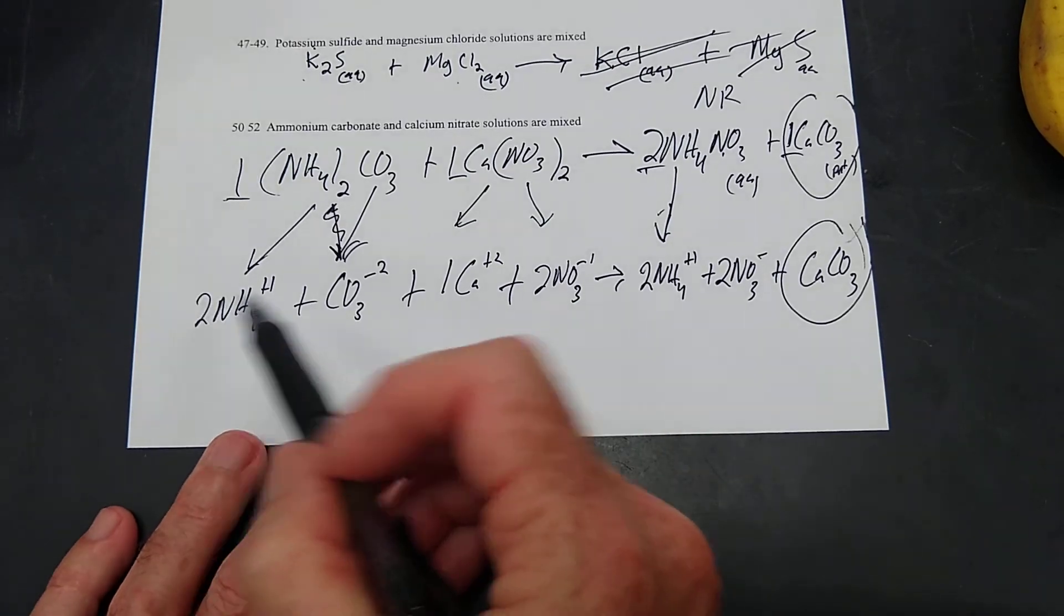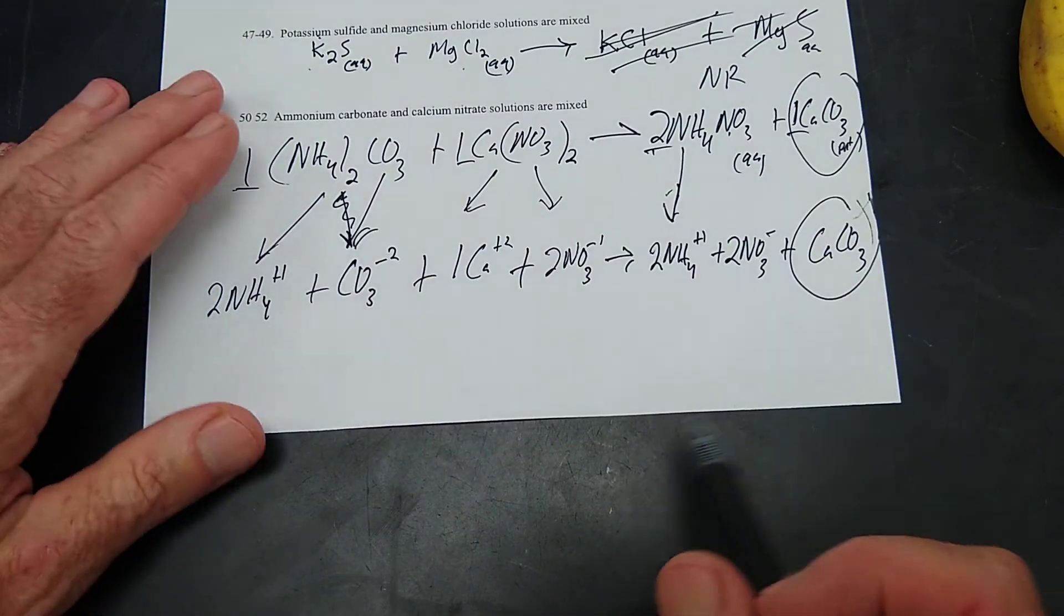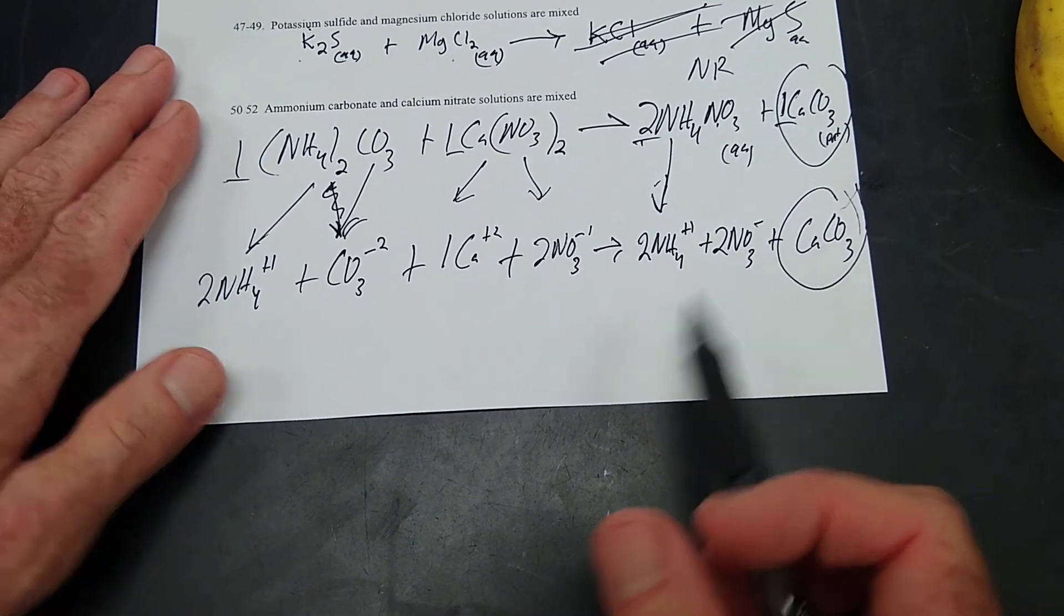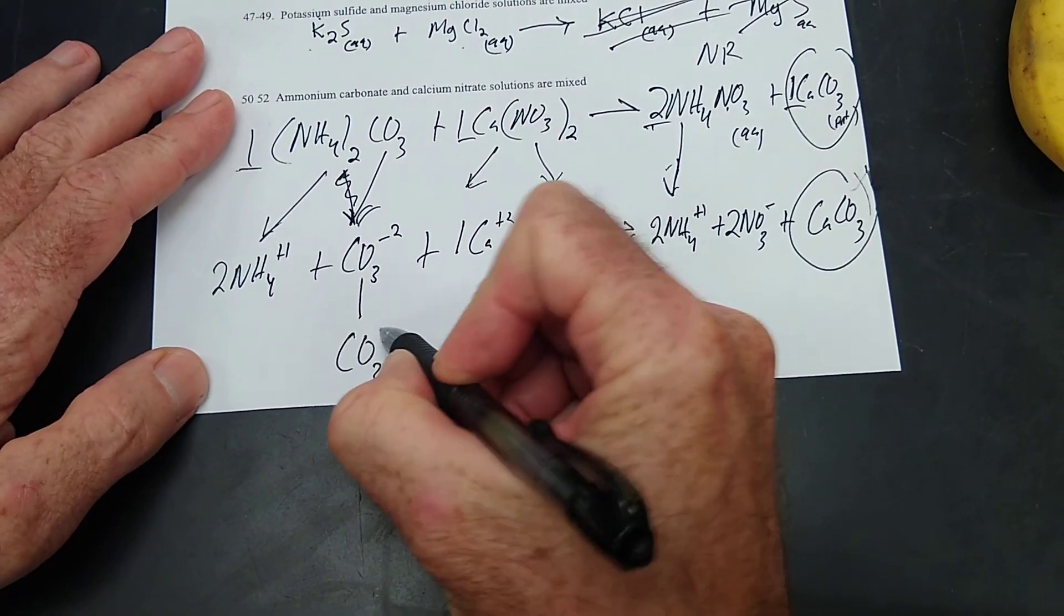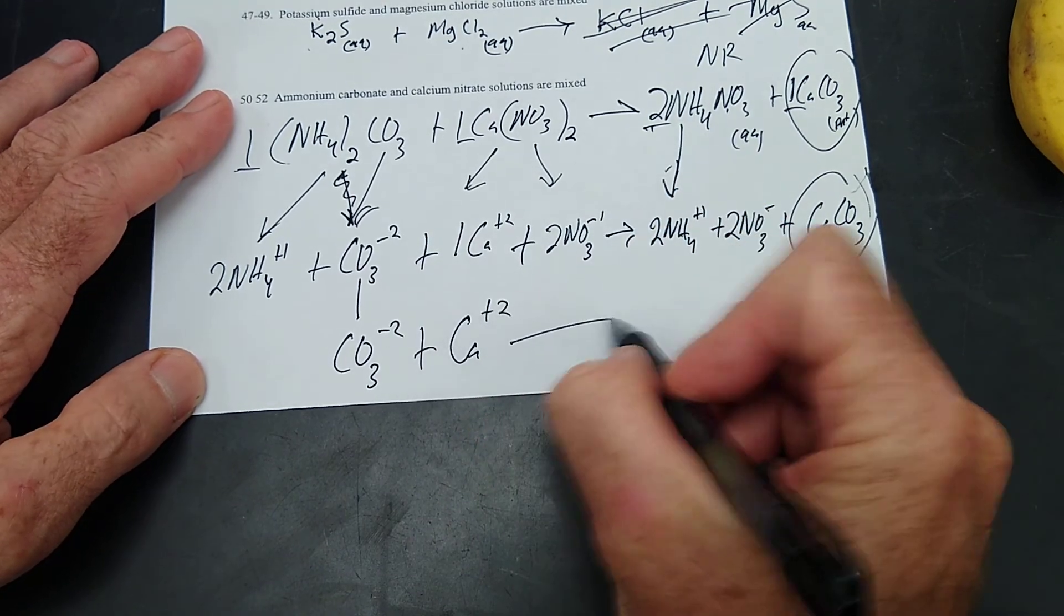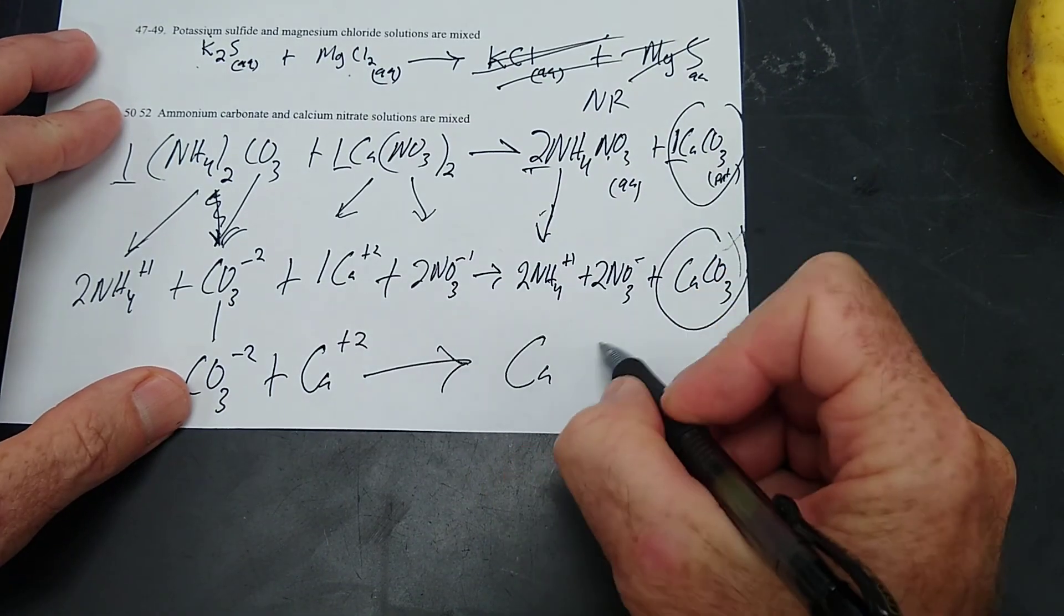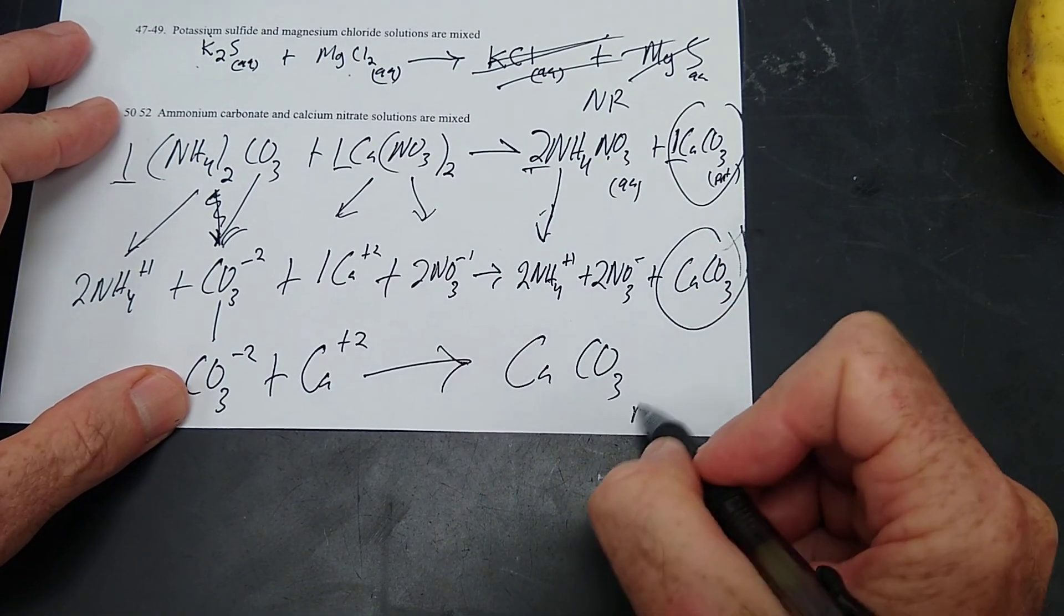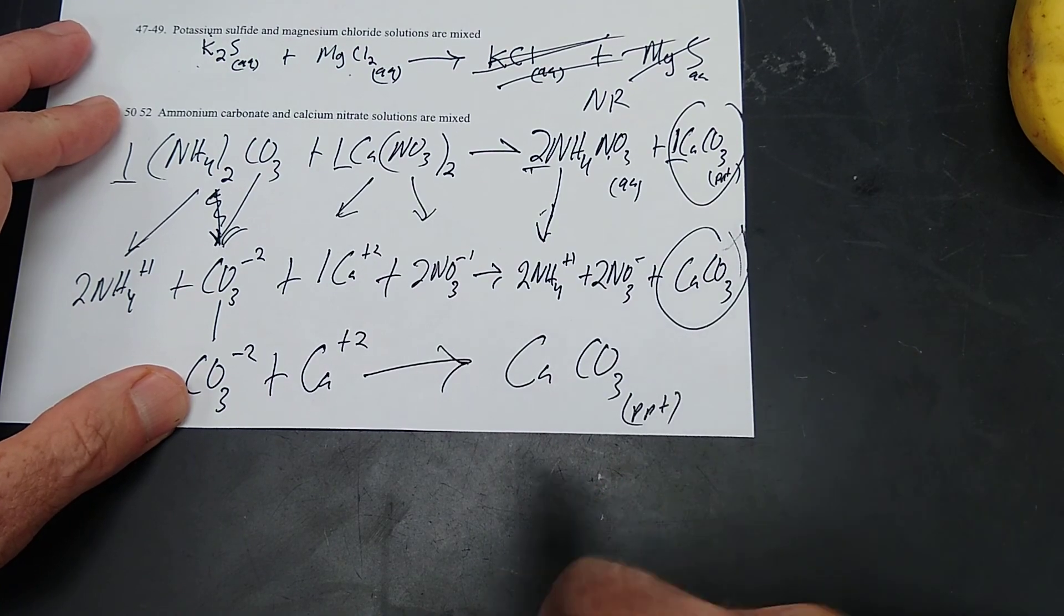So that's the complete ionic equation, and then the net is only the things that make calcium carbonate. So that carbonate negative two and a calcium positive two make calcium carbonate precipitate.